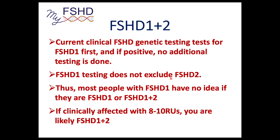FSHD1 plus 2 is turning out to be more common than we realize, because clinical FSHD1 genetic testing tests for FSHD1 first, and if positive, no additional tests are done. If you had your testing done in our lab, that's not the case — you test for both at the same time. FSHD1 testing does not exclude FSHD2. People who say 'I'm FSHD1, so I'm not FSHD2' — unless you've had specific FSHD2 testing, you don't know that. Most people have no idea if they're FSHD1 or FSHD1 plus 2. If clinically affected with small deletions of eight to ten repeat units, there's a good chance you're FSHD1 plus 2.